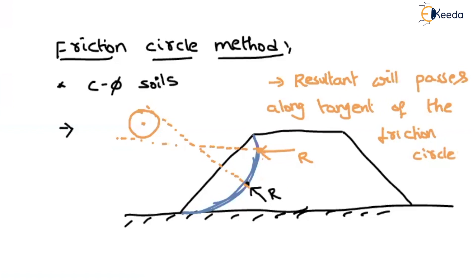The procedure to find stability of the slope will be lengthy and will not be asked in the GATE exam. In the GATE exam they may ask which type of soils it is applicable to — C-phi soils — and whatever point you consider, the resultant force will always pass through the tangent of the friction circle. The radius of the friction circle is equal to capital R into sin(phi).